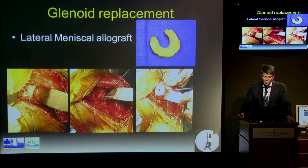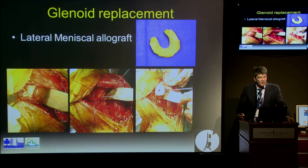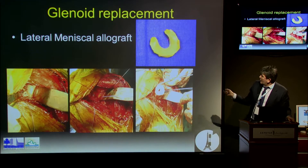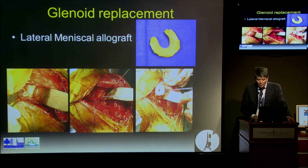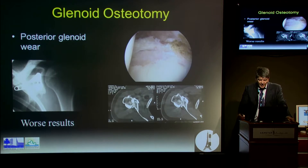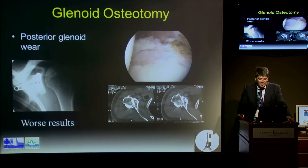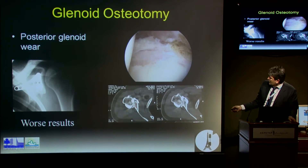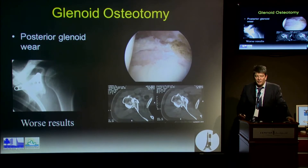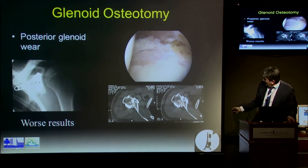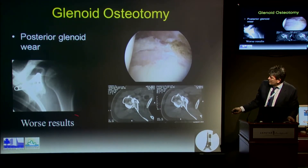We tried the technique of putting a meniscal allograft — because we know that all these glenoid implants have an important rate of loosening — converting it into a circle and placing it inside the joint to make a biologic resurfacing of the glenoid. All our patients failed. All of them. We also tried conservative techniques for patients with posterior glenoid wear: a glenoid osteotomy, like in the knee, to push the head anteriorly. This was our worst result.